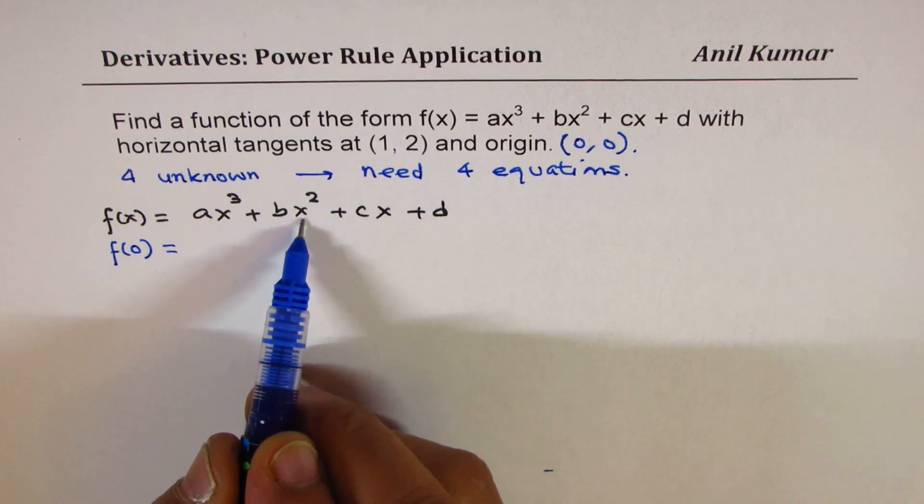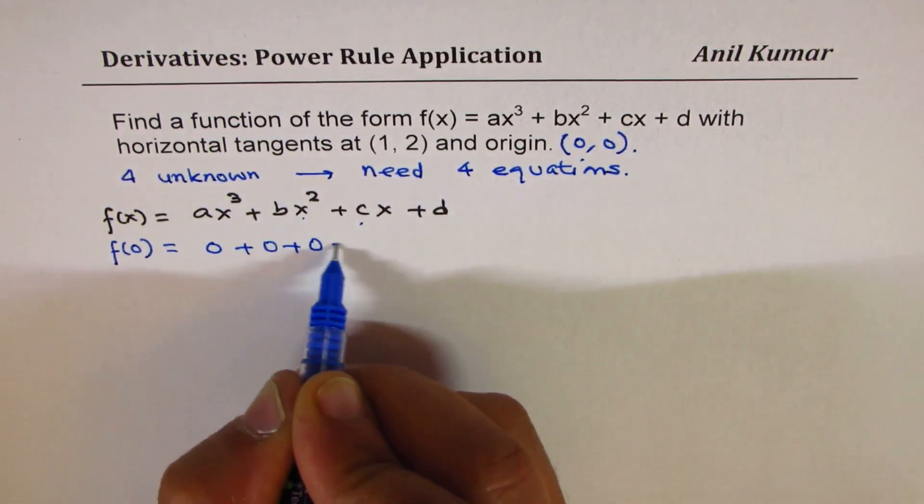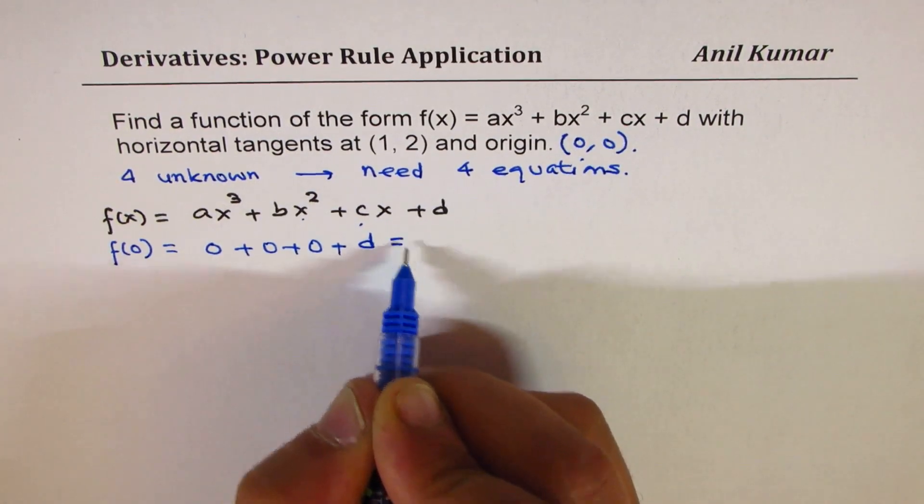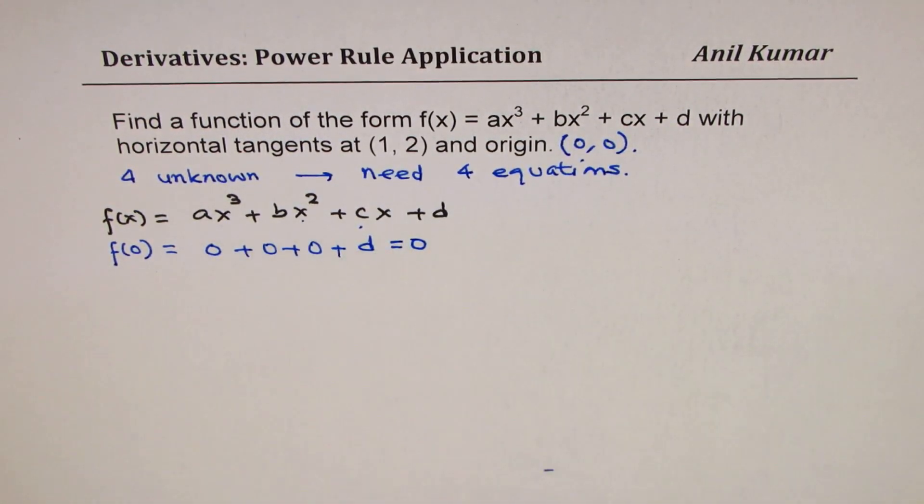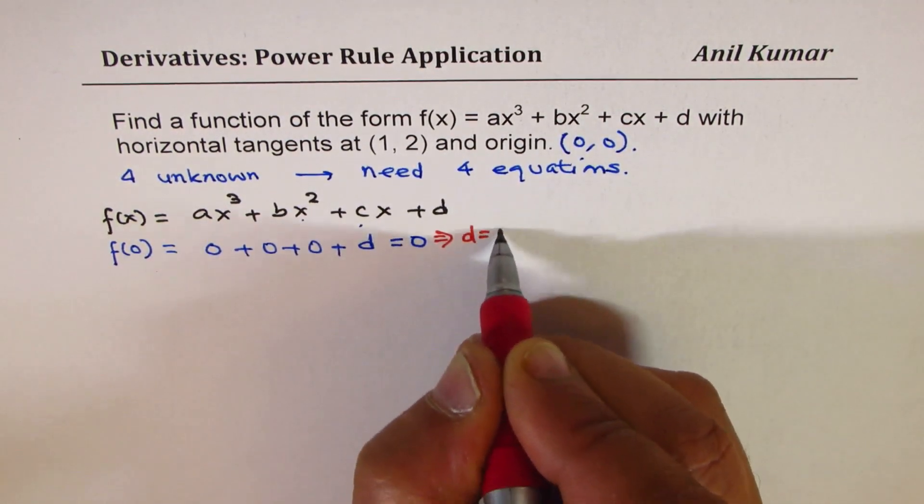So let's use (0, 0). So f(0) is what? So if you substitute 0 here, 0 here, and 0 here, we get 0 plus 0 plus 0 plus d, and this is equal to 0. So that gives you one value, which is d equals to 0.